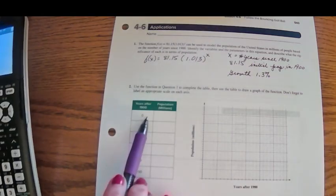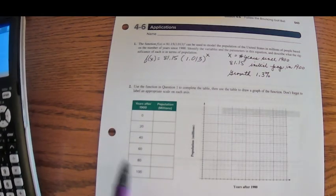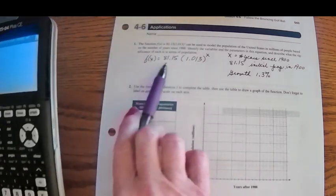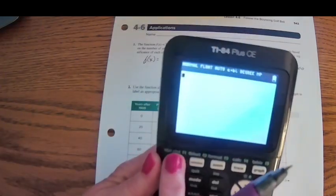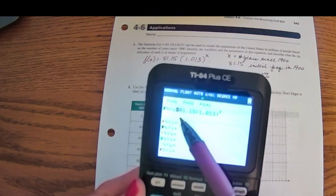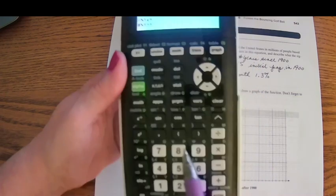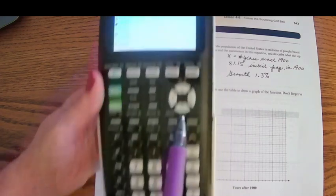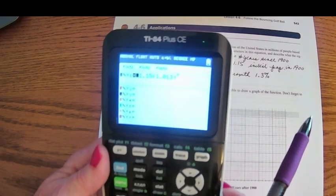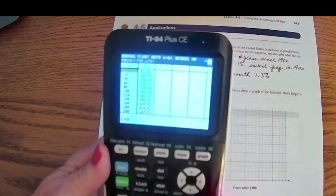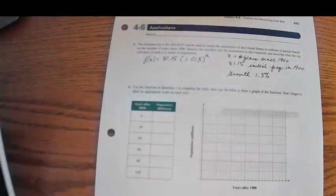So that's in table settings, and that's how we're going to get 0, 20, 40, 60, 80, and 100. Now I want to put this function in my y1. So you press the y equals, and I've put the function 81.15, here's your open paren, 1.013, here's your close paren, raised to the x. So I have my function in y1, and I have my table settings, so now the blue key for table would be second table. And here's my table with my population model.